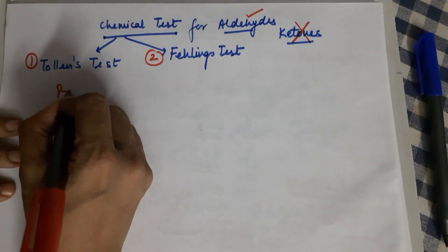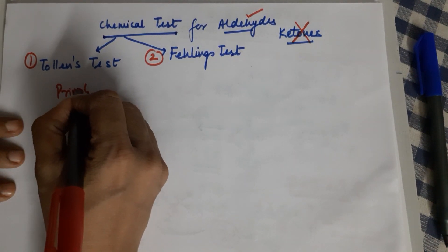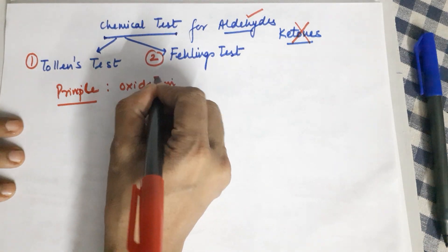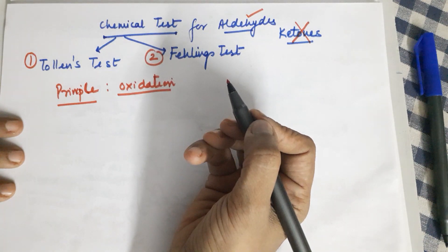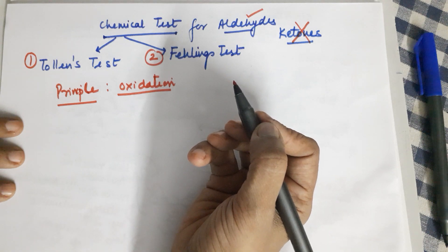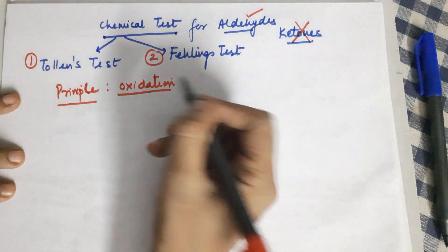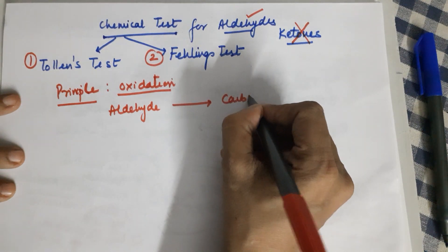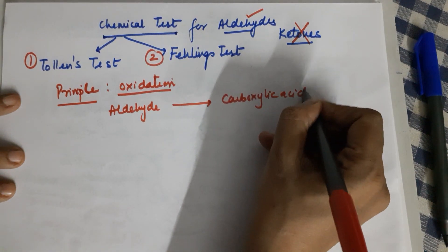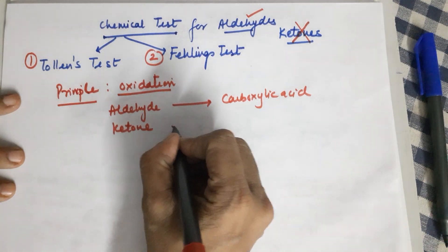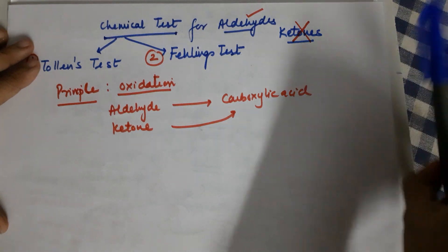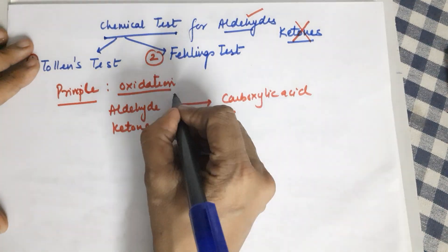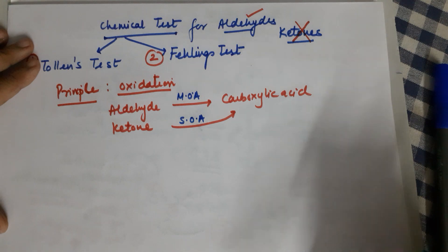The principle behind this particular method is oxidation, which we have already covered in the last video comparing aldehydes and ketones. When you have an aldehyde and you oxidize it, it forms a carboxylic acid. For a ketone, oxidation also forms a carboxylic acid, but unfortunately ketones require a strong oxidizing agent, while for aldehydes a mild oxidizing agent is enough.